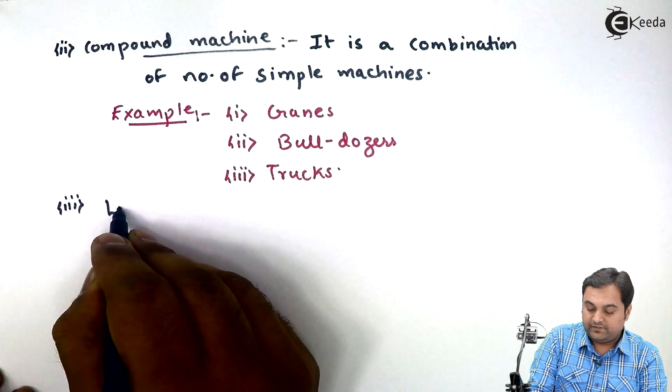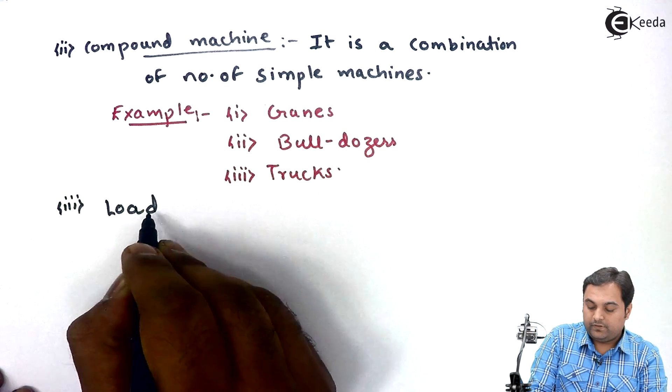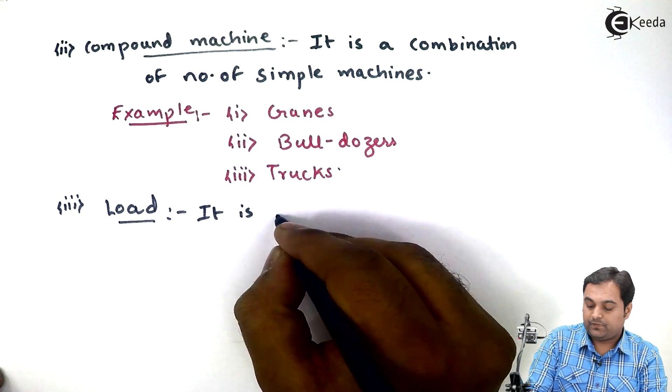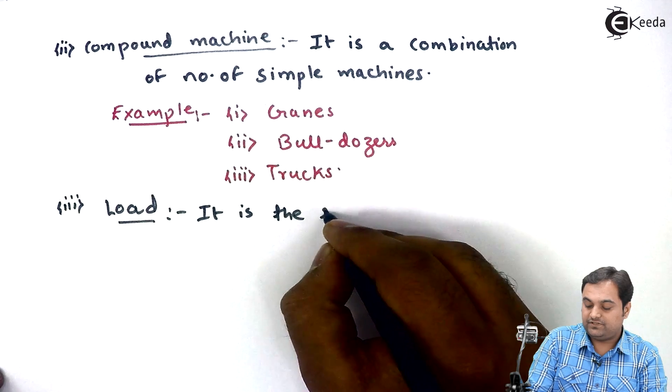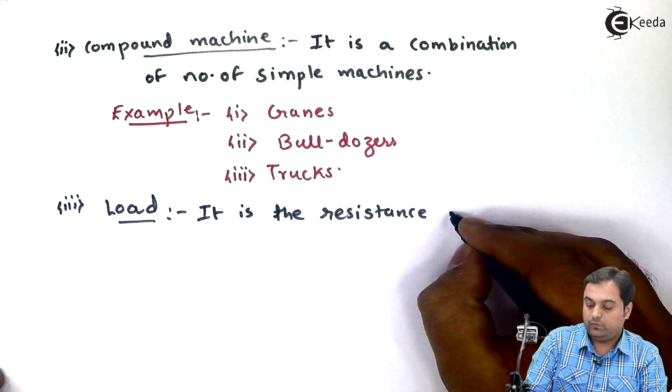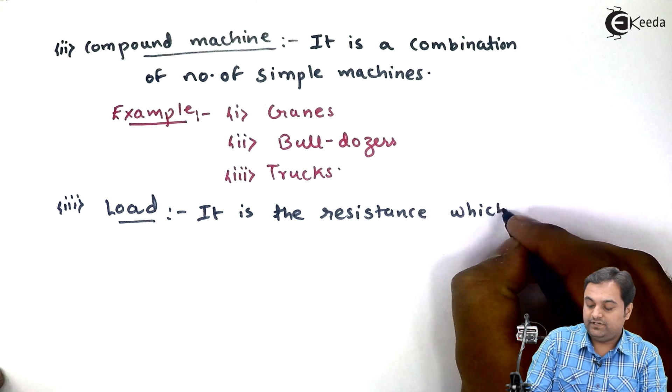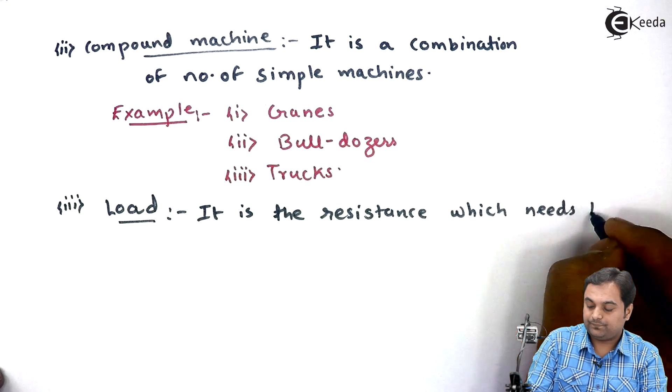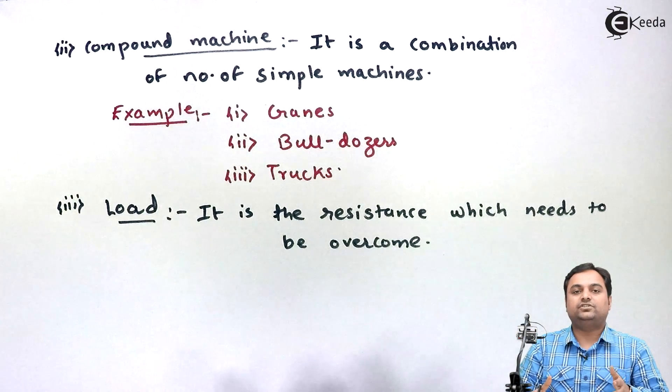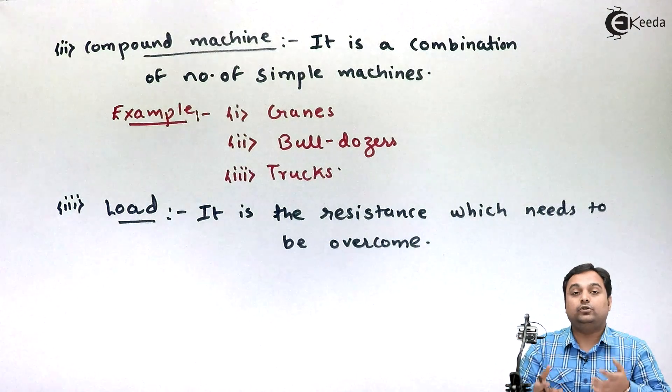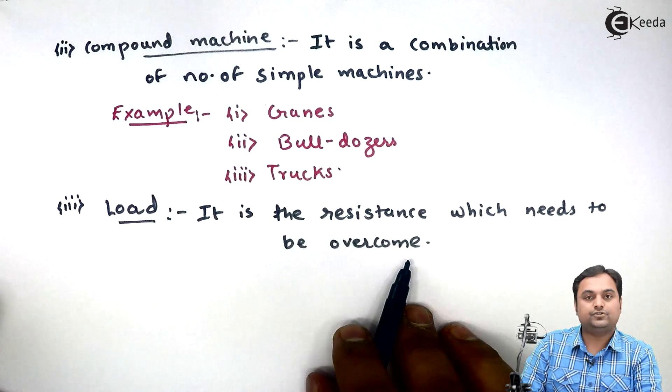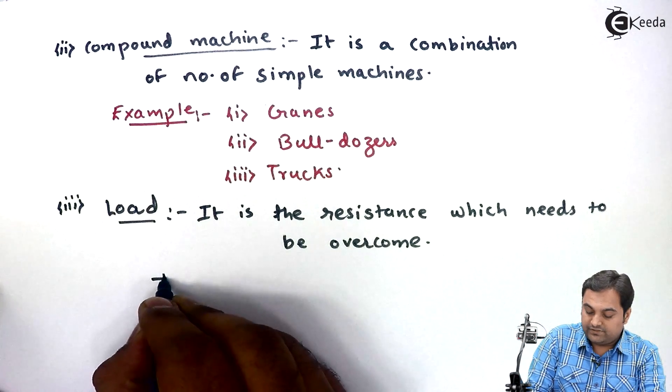The next definition is important, that is called as load. Load is the resistance which needs to be overcome if we want to lift a certain load. It is denoted by capital W.